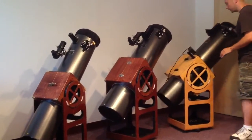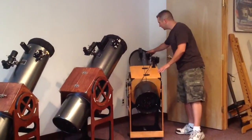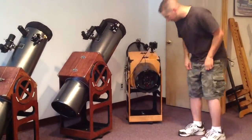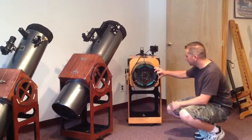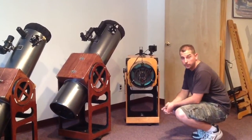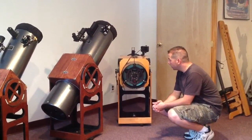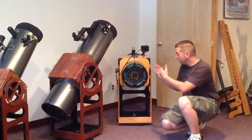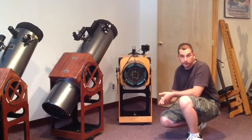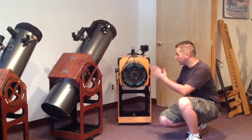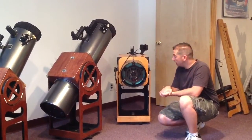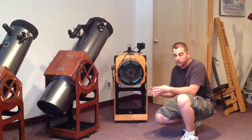One other thing I wanted to mention about the STS telescopes, we'll come over here to the 11-inch, is the new mirror cells that we're using. These are machined aluminum mirror cells optimized to fit the 11-inch, 10-inch, and 8-inch mirrors. So it's not like we're putting the 11-inch mirror in a 10-inch cell. This cell is optimized for the 11-inch mirror, and it's a six-point flotation mirror cell.